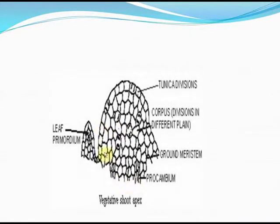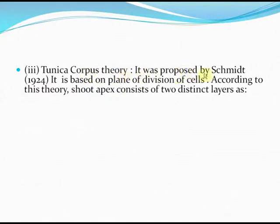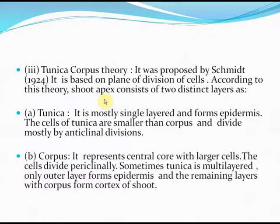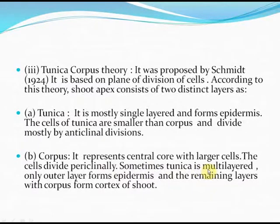The tunica corpus theory was proposed by Schmidt and is based on the plane of division of cells. According to this theory, the shoot apex consists of two distinct layers: the tunica, which is mostly single-layered and forms the epidermis — its cells are smaller than corpus and divide mostly by anticlinal divisions — and the corpus, which represents the central core with larger cells that divide periclinally. Sometimes tunica is multi-layered; only the outer layer forms the epidermis and remaining layers with corpus form the cortex of the shoot.